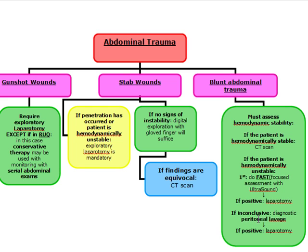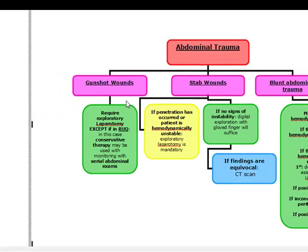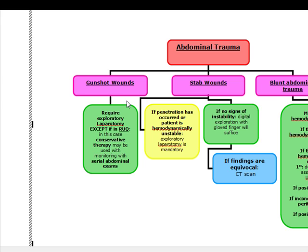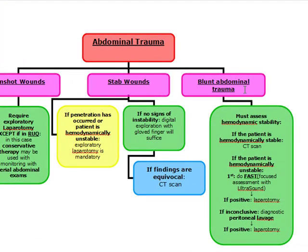To summarize: Gunshot wounds — exploratory laparotomy, except right upper quadrant, which gets serial abdominal exams. Stab wounds — check hemodynamic stability; unstable means laparotomy, stable means digital exploration with gloved finger, equivocal findings go to CT. Blunt abdominal trauma — assess stability; stable gets CT, unstable gets FAST ultrasound first. FAST positive means laparotomy; FAST inconclusive means diagnostic peritoneal lavage, and if that's positive, laparotomy.